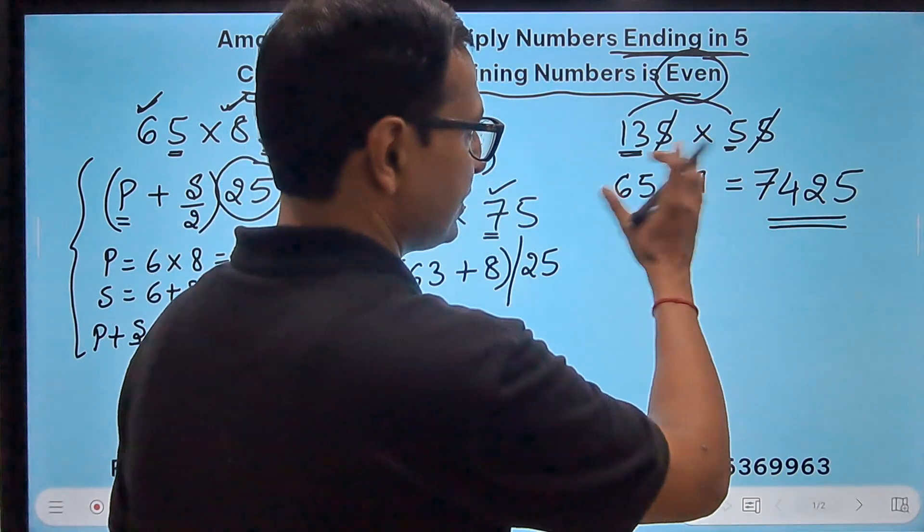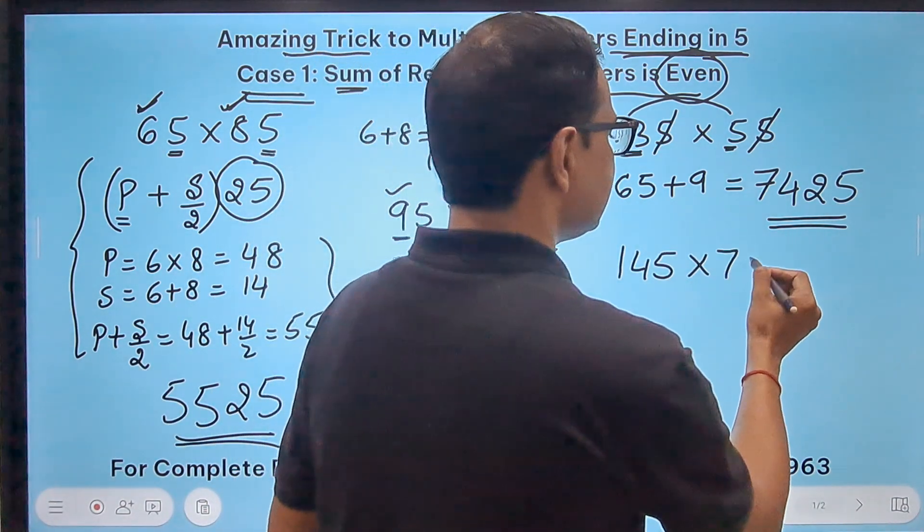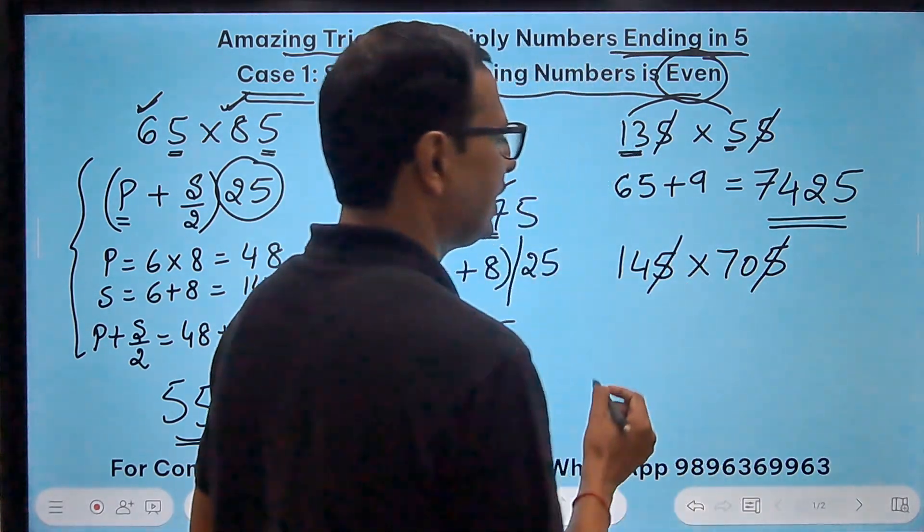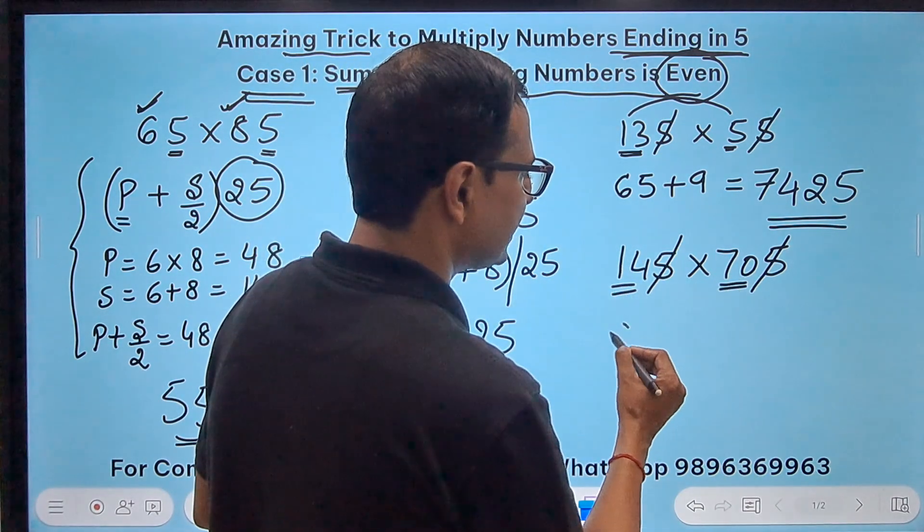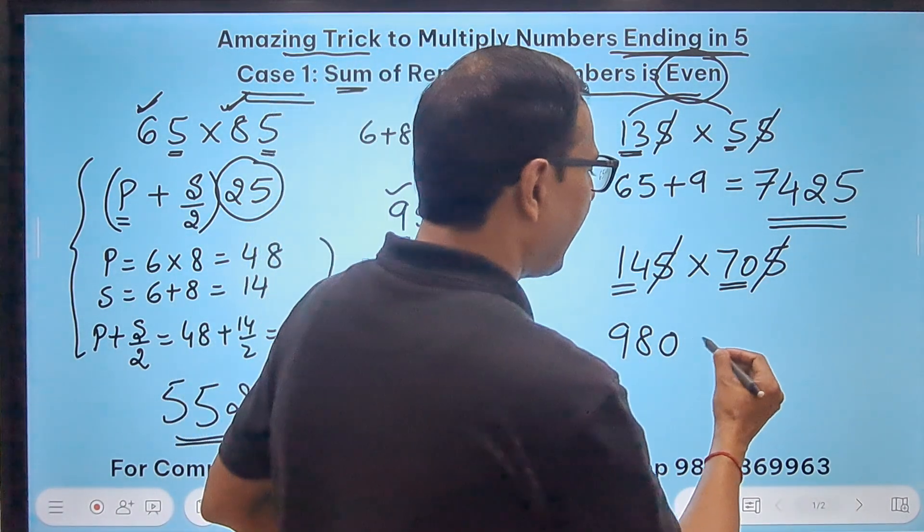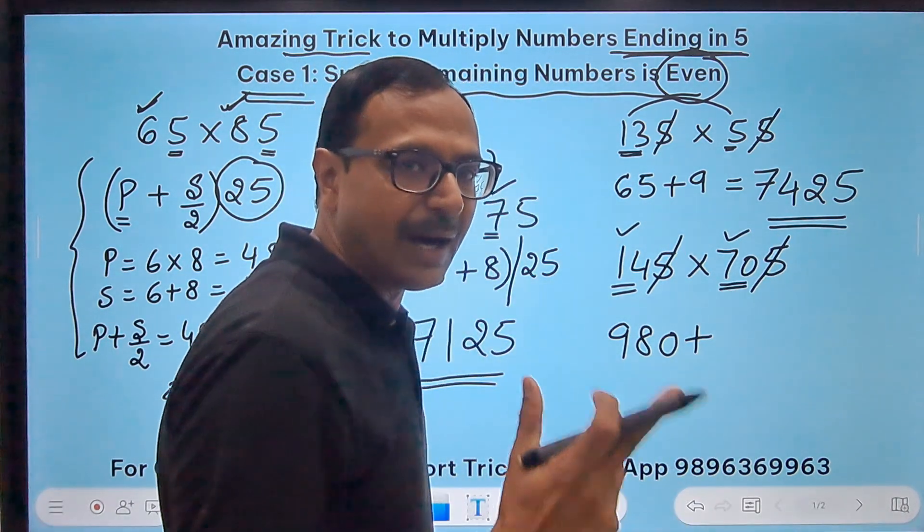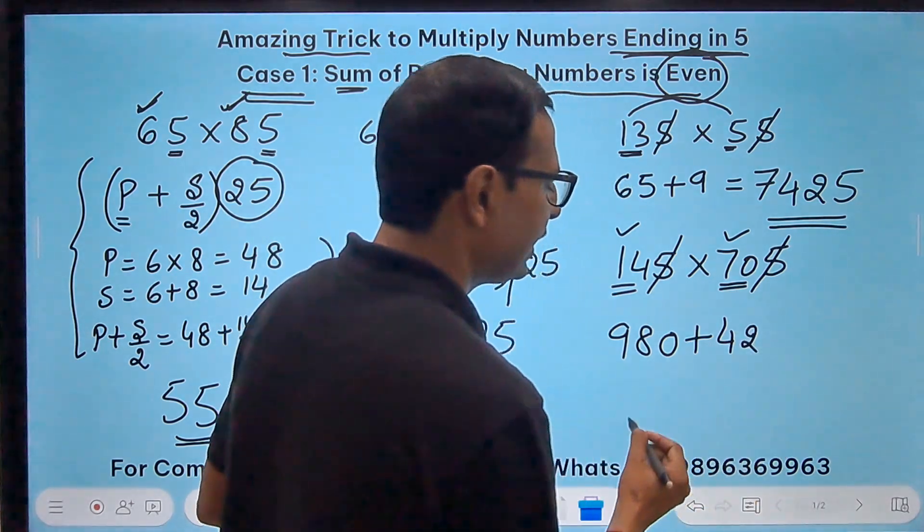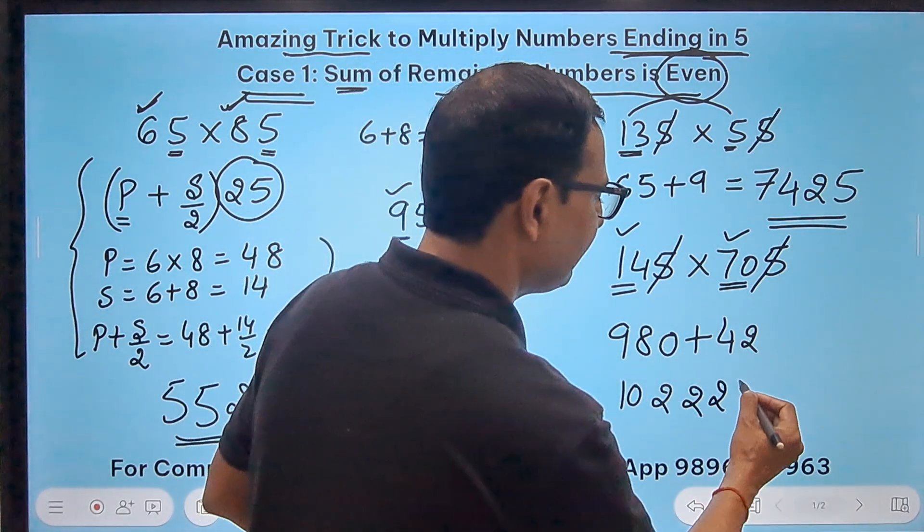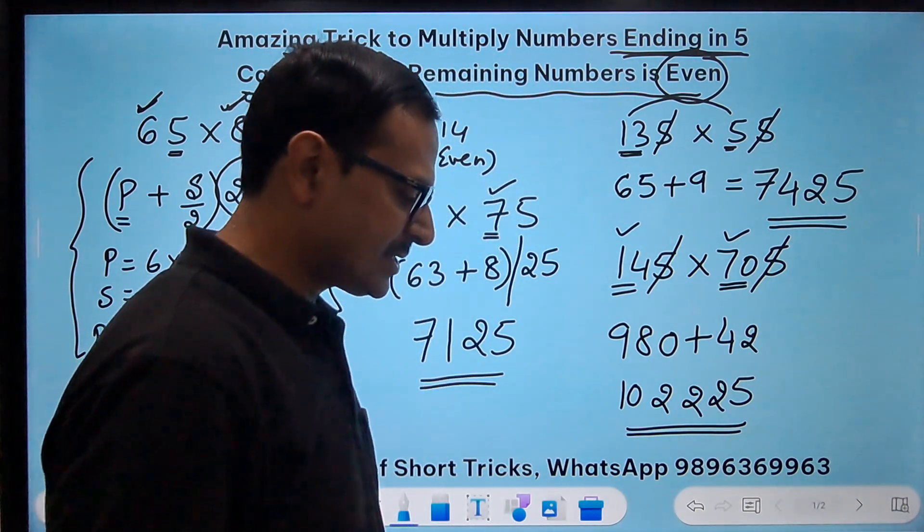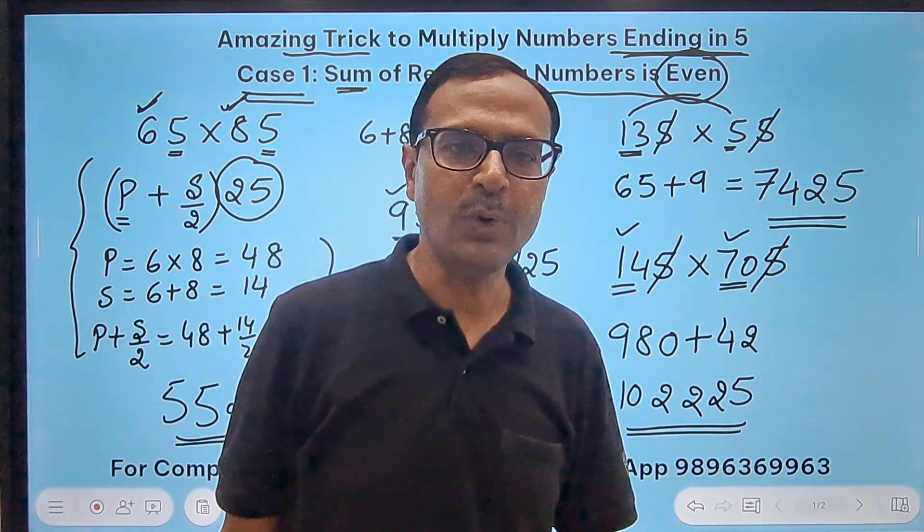If suppose both numbers are three digit numbers, let's take 145 and 705. Apart from the 5s we have a 14 and a 70. If I want to find the product, 14 times 7 is 98 followed by a 0, that is the product. And the sum, 14 plus 70 is 84, and half of 84 is 42. This is 2, 8 plus 4 is 12, 2, 1 carry means 10, and a 25 suffix to the result will give me 102225 as the product of 145 and 705.